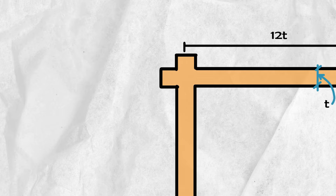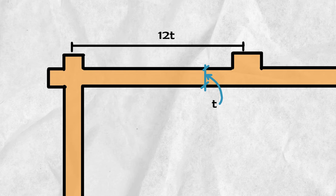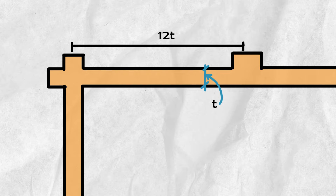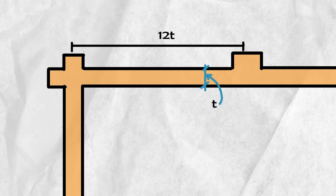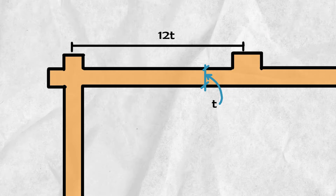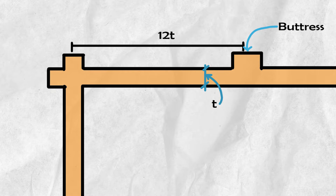The maximum length of an unsupported wall shall not exceed 12 times its thickness. If necessary, it shall be provided with a buttress at intervals.